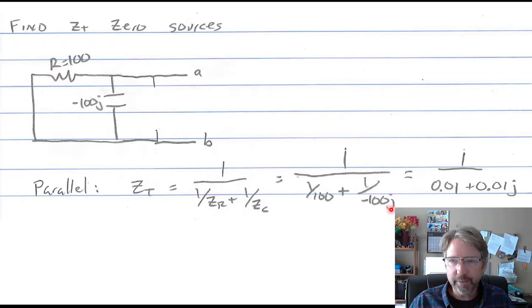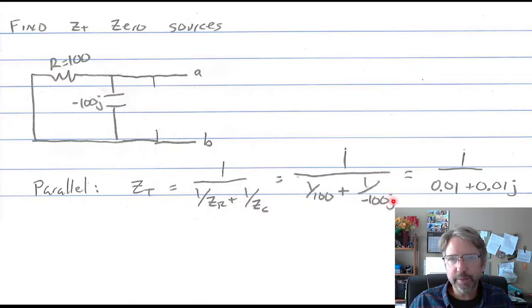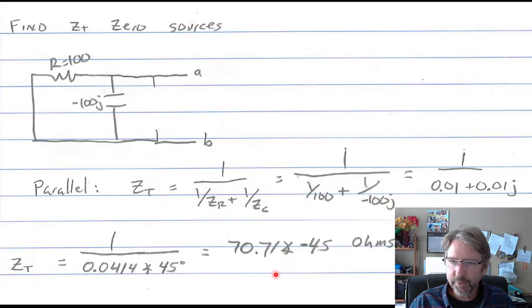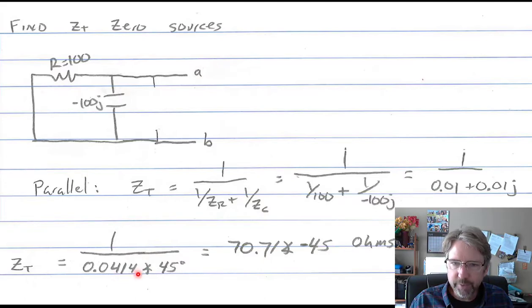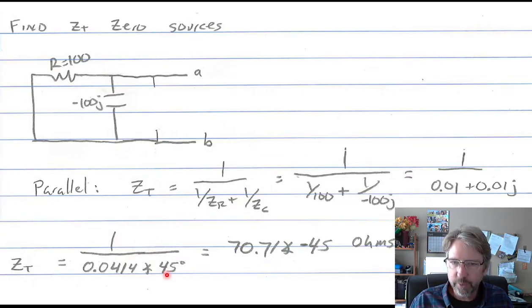When you have j in the denominator, you can move it to the numerator by flipping the sign, because multiplying top and bottom by j/j gives j in the top and j² = −1 in the bottom. You could also just put it in your calculator and find the final answer. In polar form, the division is easy: the amplitude is 1 over the denominator amplitude — so 1 over 0.0414 gives 70.7 — and the phase is 0 minus 45 degrees (numerator phase minus denominator phase), giving minus 45 degrees.